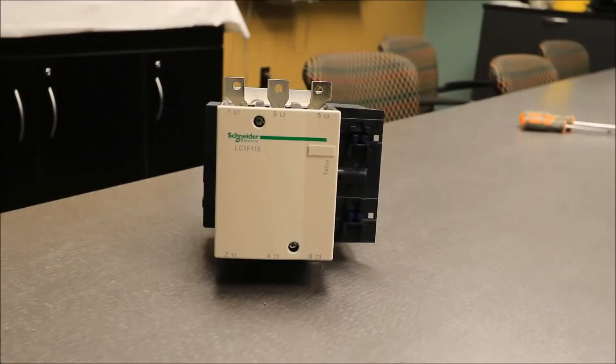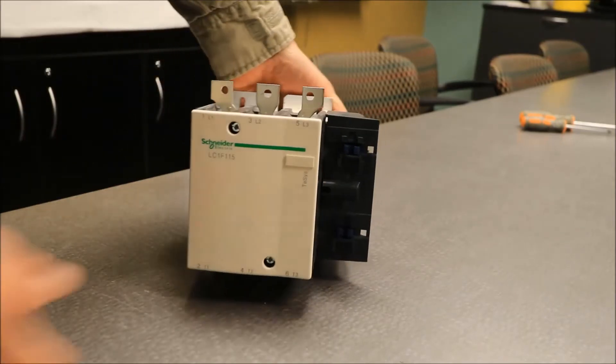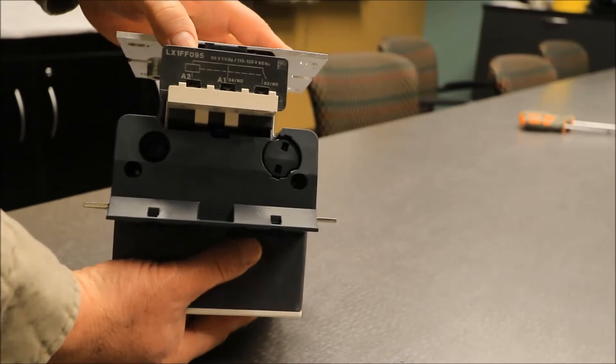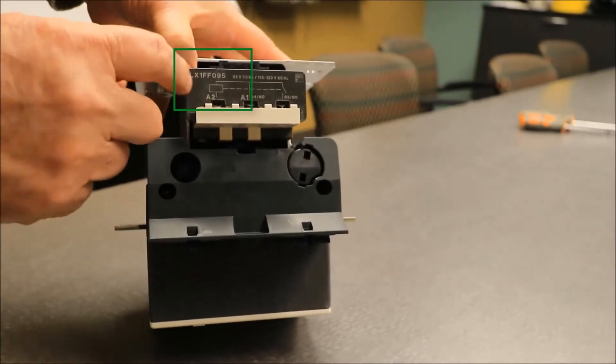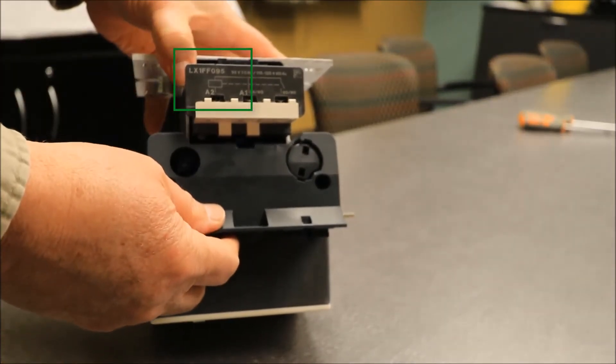Today we're going to talk about changing out a coil in an LC1 F115. The coil is over on the right-hand side in the back. The coil part number is on the coil.